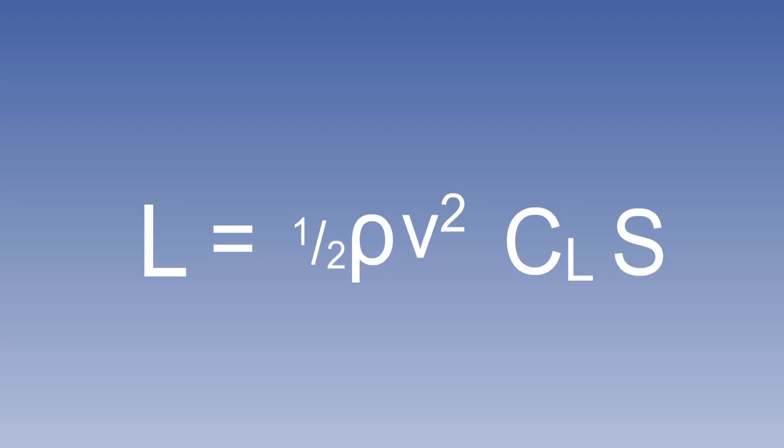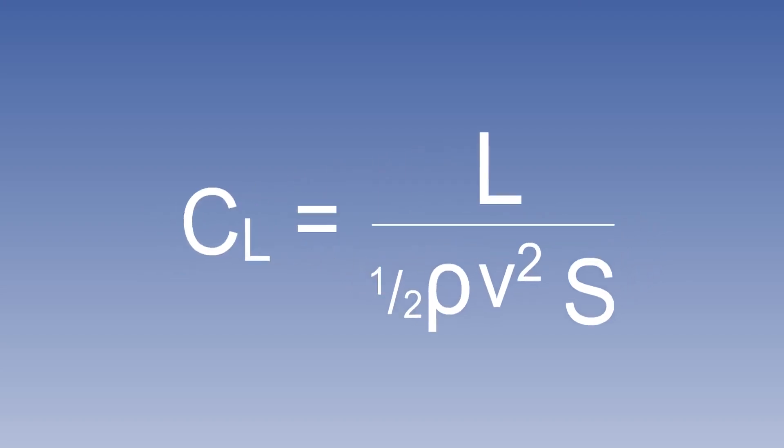The lift formula can be transposed in several ways to calculate variables which may be of interest to a professional aviator. For example, if speed is increased in level flight by 30% from the minimum level flight speed, we can calculate the new CL as a percentage of CL max. L = ½ρV² × CL × S when transposed becomes CL = L / (½ρV²S).